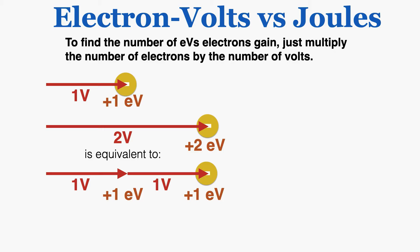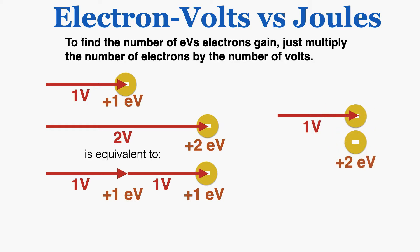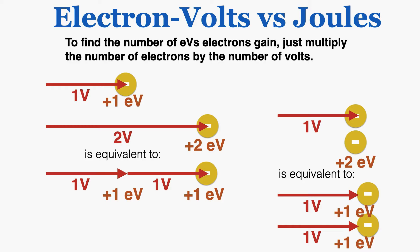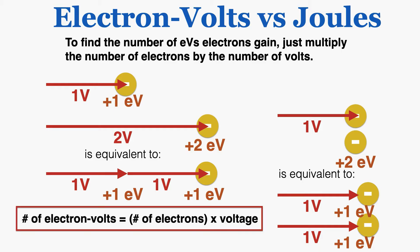So I can see that would gain two electron volts. Similarly, if two electrons passed through a one-volt region, they would also gain two electron volts, because those two electrons are equivalent to two individual electrons each moving through their own one-volt region. Each individual electron would gain one electron volt, so altogether they gain two electron volts. This confirms that the number of electron volts gained equals the number of electrons multiplied by the voltage.